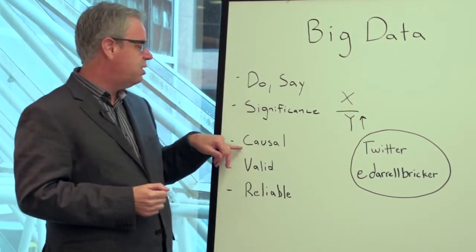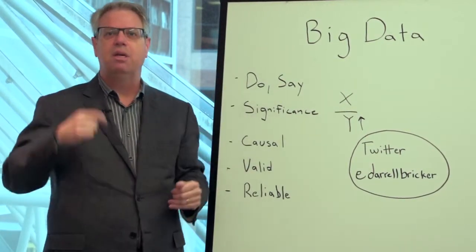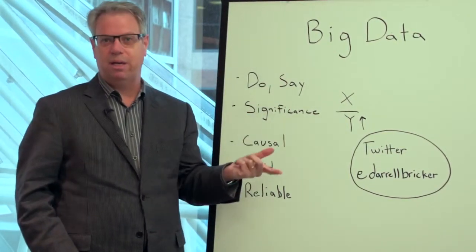The next thing is causality. Causality implies that this one thing changing causes another thing to change. So for example, the more education you have, the higher your income is likely to be.